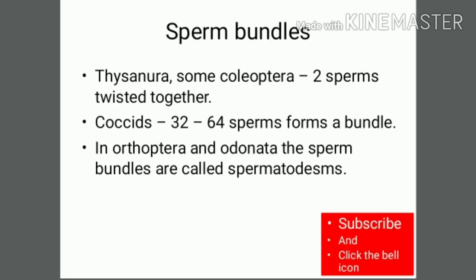Next is the sperm bundle, seen in some Coleoptera, where two sperms are twisted together to form a bundle. In Coquets, 32 to 64 sperm form a bundle. In Orthoptera and Odonata, these sperm bundles are called spermatodesms.